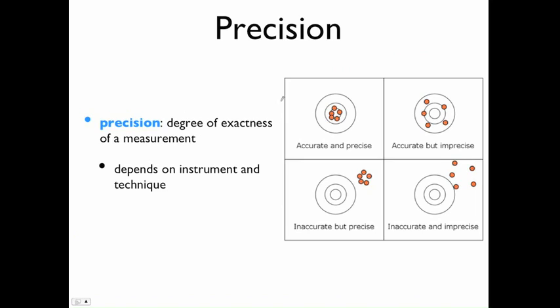Precision is how exact the measurement is. It depends on the instrument and the technique. For precision, you want all your numbers close together. This is precise - you can see they're all close together, so we have precision here. We also have precision here, because all of the darts are really close together.